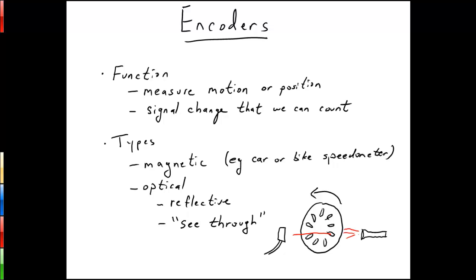Another kind of encoder is an optical encoder and there's a couple kinds of those. There's a reflective encoder, which is what we're going to show today. And there's also what's known as a see-through encoder.